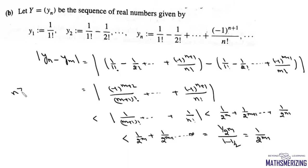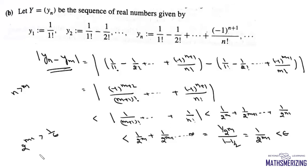So for any n greater than m, mod yn minus ym is less than 1 upon 2^(m-1), which is less than epsilon. We can write 2^(m-1) is greater than 1 upon epsilon, or m is greater than 1 minus log epsilon. So this sequence is a Cauchy sequence, and therefore it is a convergent sequence.